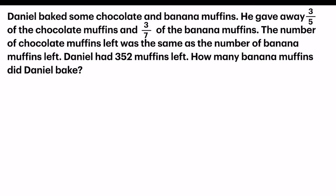Daniel baked some chocolate and banana muffins. He gave away three-fifths of the chocolate muffins and three-sevenths of the banana muffins. The number of chocolate muffins left was the same as the number of banana muffins left. Daniel had 352 muffins left.